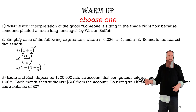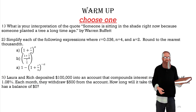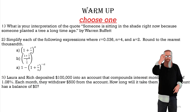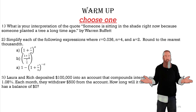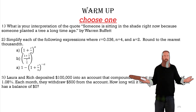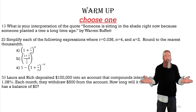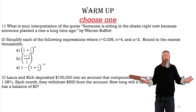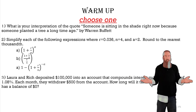To make sure we're ready for this lesson, let's take a look at warm-up number two and simplify each of the following expressions where r is 0.036, n is 4, and a is 2. We'll round to the nearest hundredth.